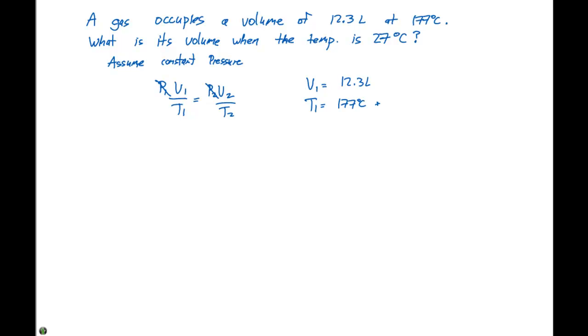So we're going to add 273 Kelvin. That's going to give us a value of 450 Kelvin with the zero being a significant figure. Our second volume is what we're trying to solve for.